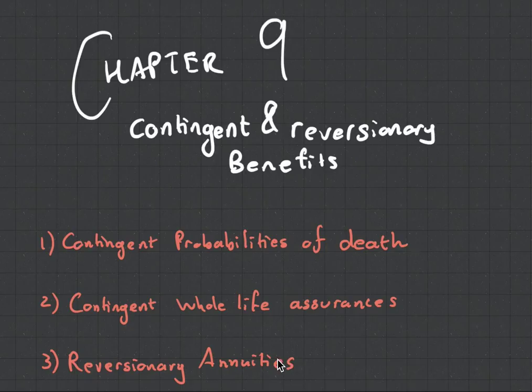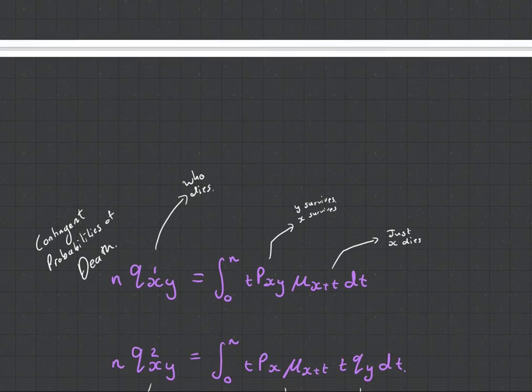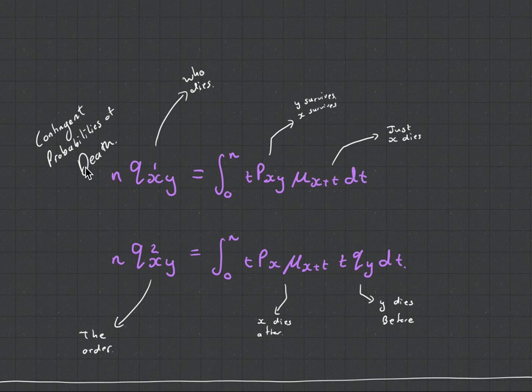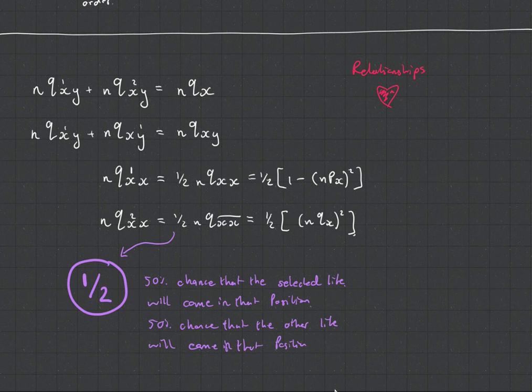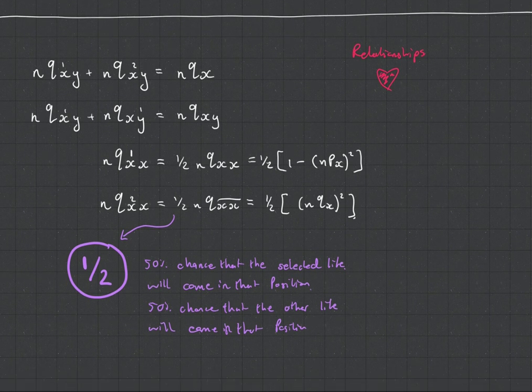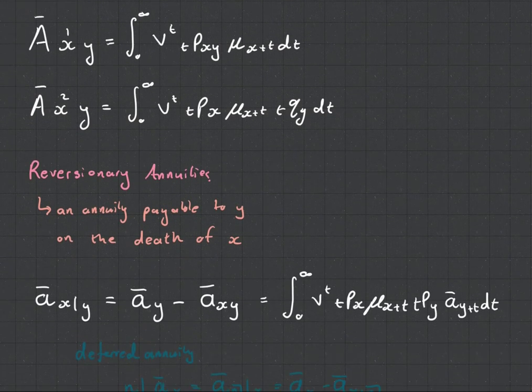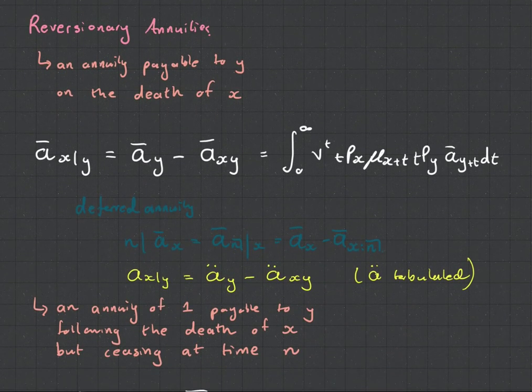But we're going to try to understand it because it is quite awesome, the mathematics is quite hardcore, so let's get stuck into it. I have made some previous videos on Chapter 9 where I spoke about contingent probabilities of death and the different relationships, so feel free to watch them before you come and watch this one. But this one is about Revisionary Annuities.